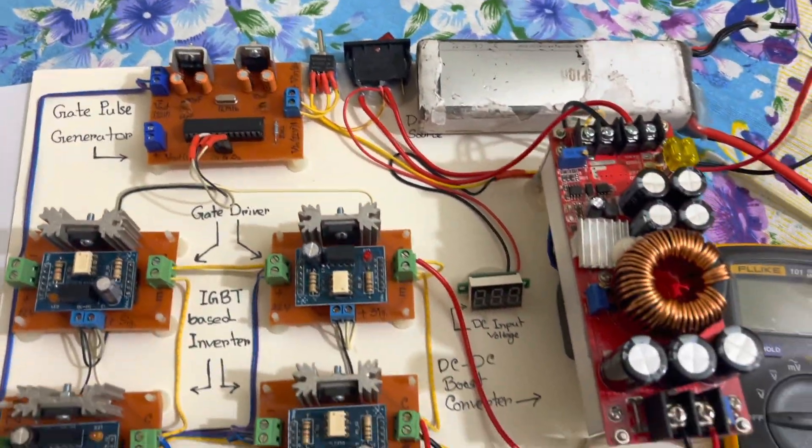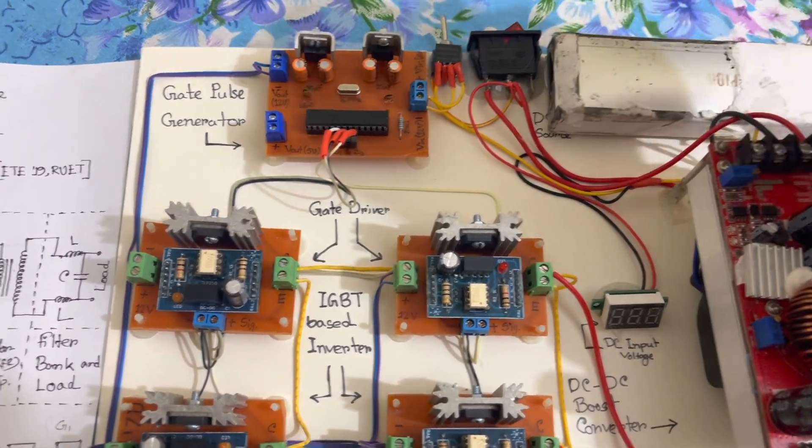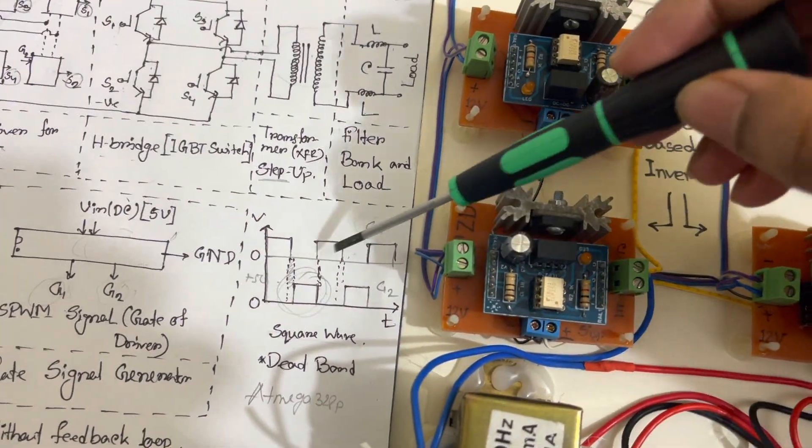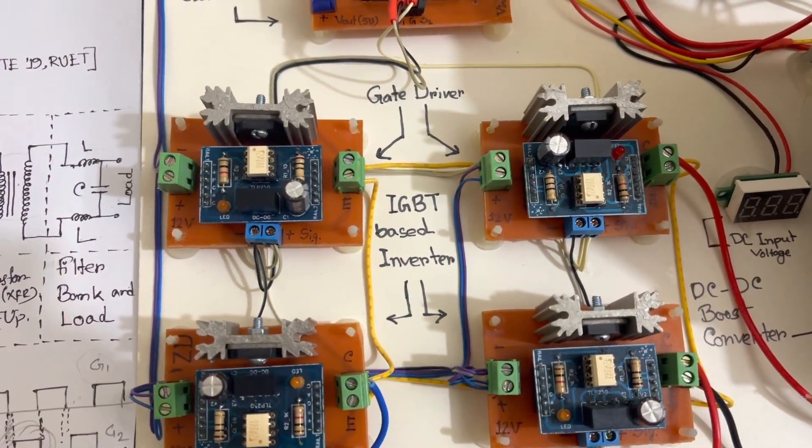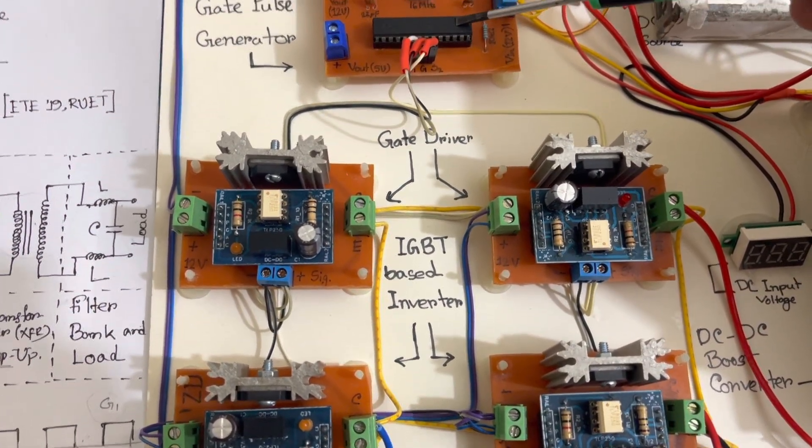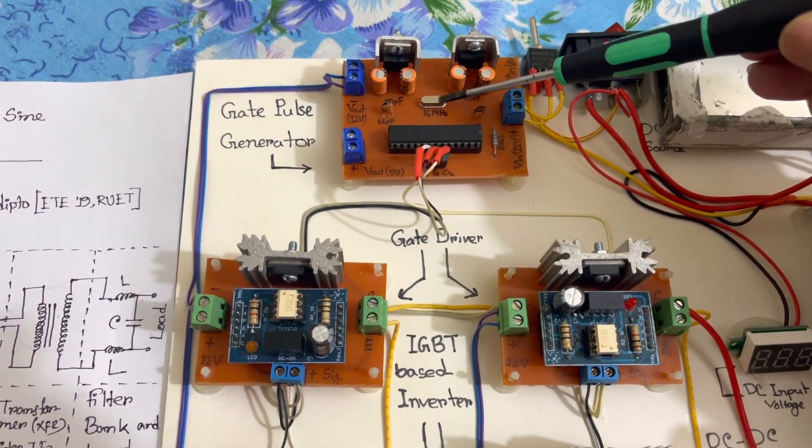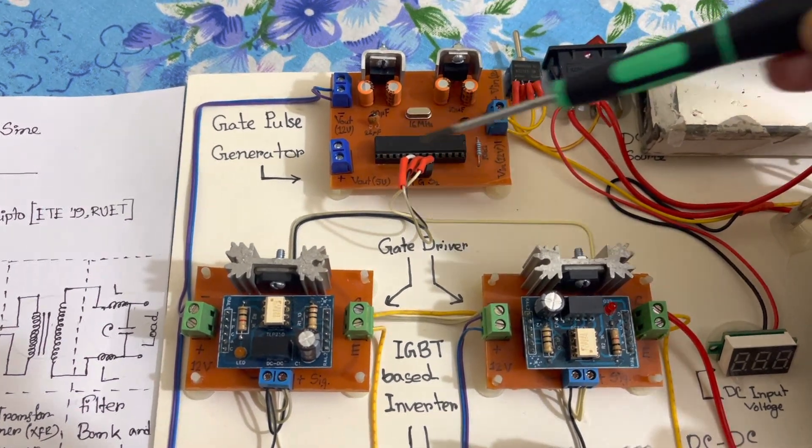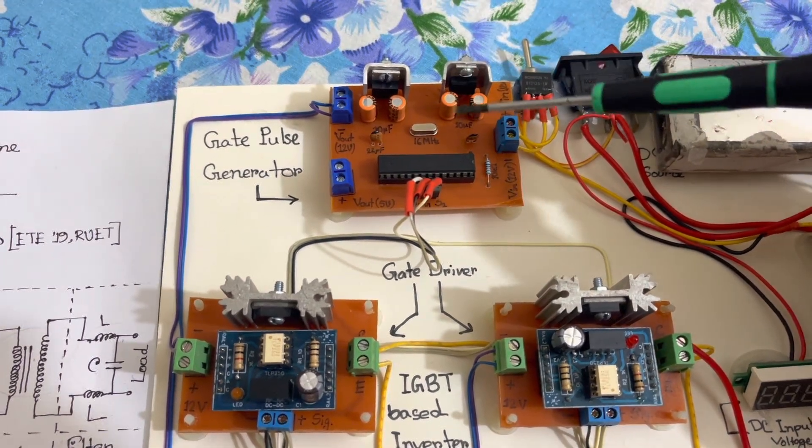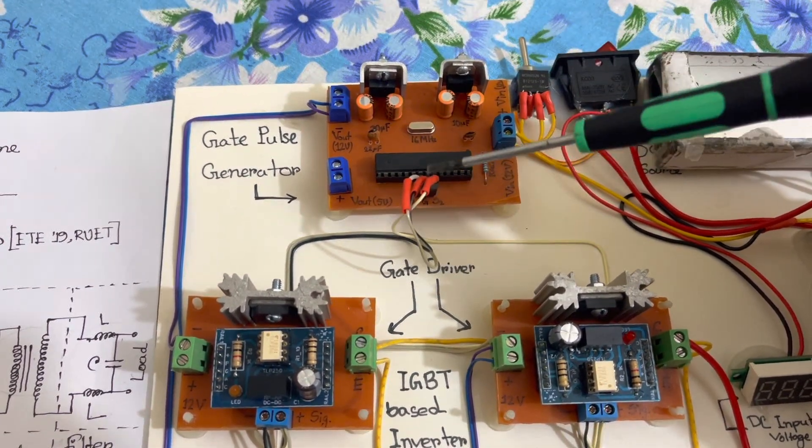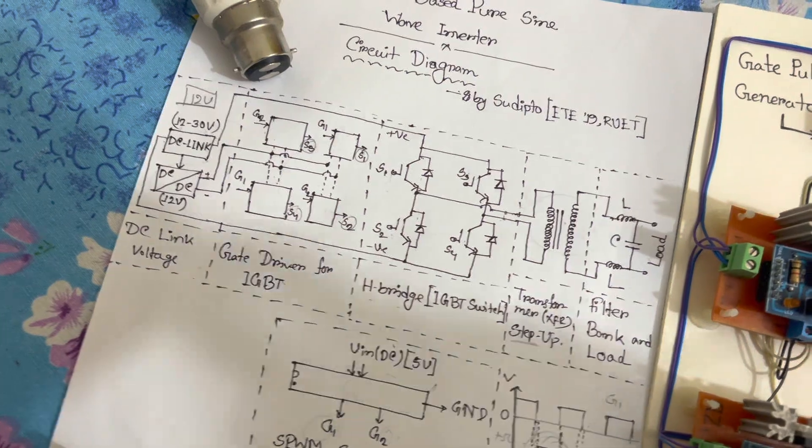This board or microcontroller is responsible for generating the gate pulse which I showed you in the theoretical part. This signal is generated from this IC, the ATmega328P. To work properly we have used a crystal oscillator as it requires, and in this board we have built-in power supply - this is a 12-volt power supply and this is a 5-volt power supply to work it properly.